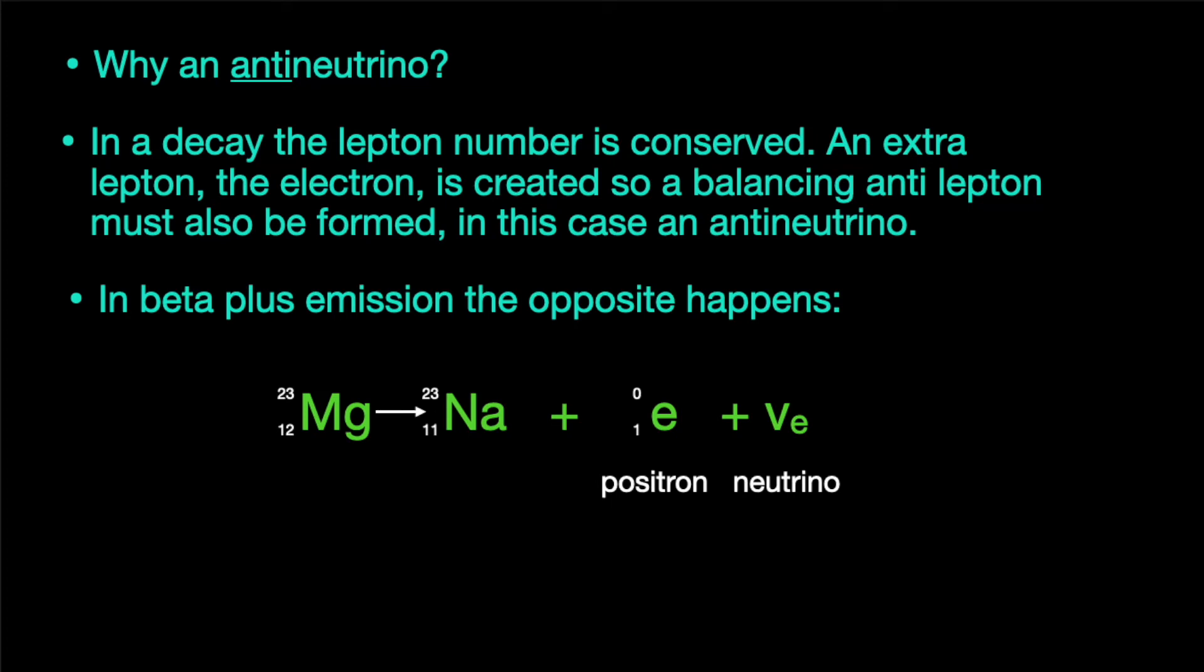To balance the lepton number, a neutrino is emitted. We can use a Feynman diagram to illustrate what happens on a rather more fundamental level. This is not a graph, but it aims to give an image of what happens over a short period of time.